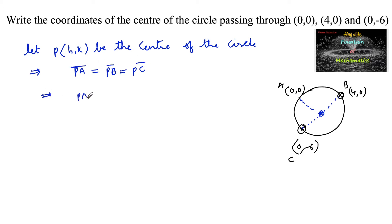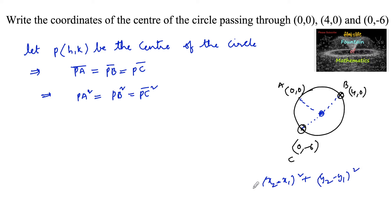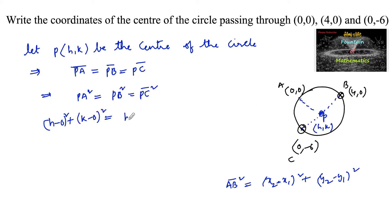This can also be written as PA² = PB² = PC². Using the distance formula, PA² = (H−0)² + (K−0)², PB² = (H−4)² + (K−0)², and PC² = (H−0)² + (K+6)².